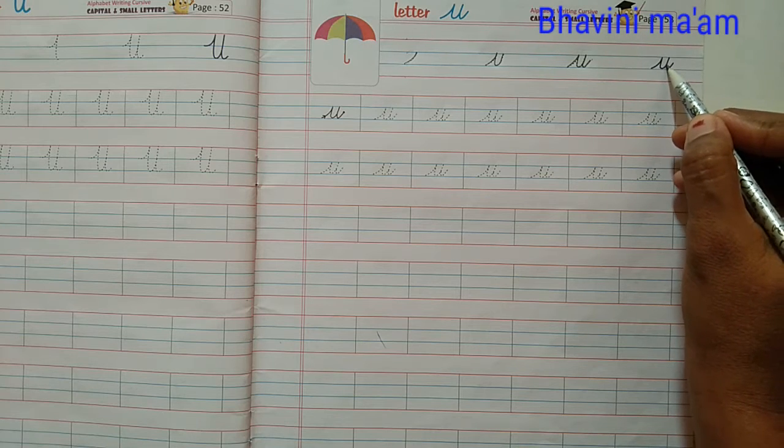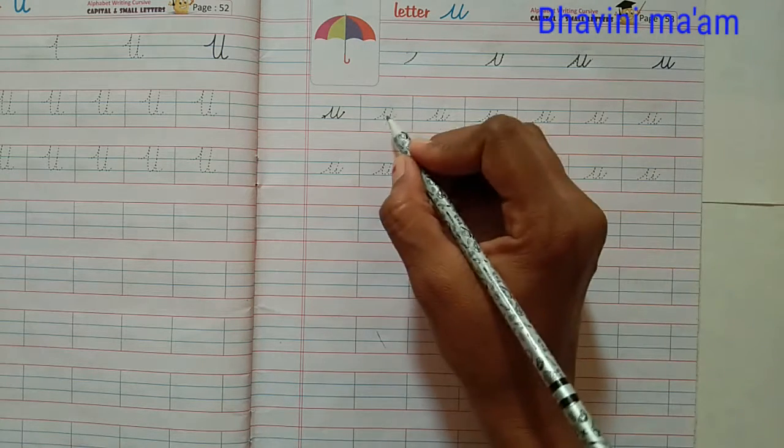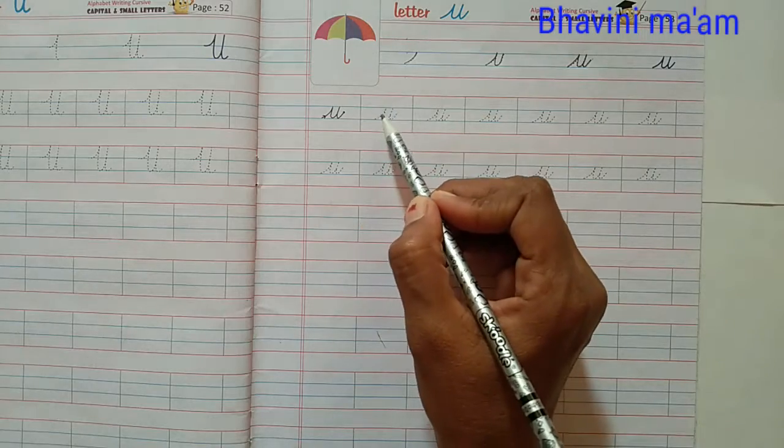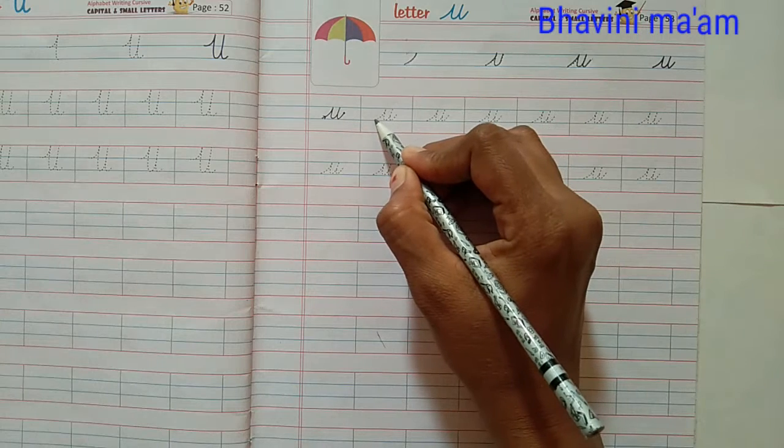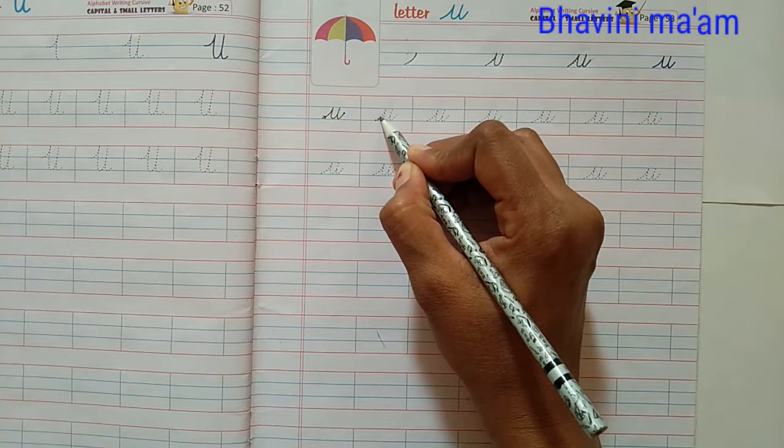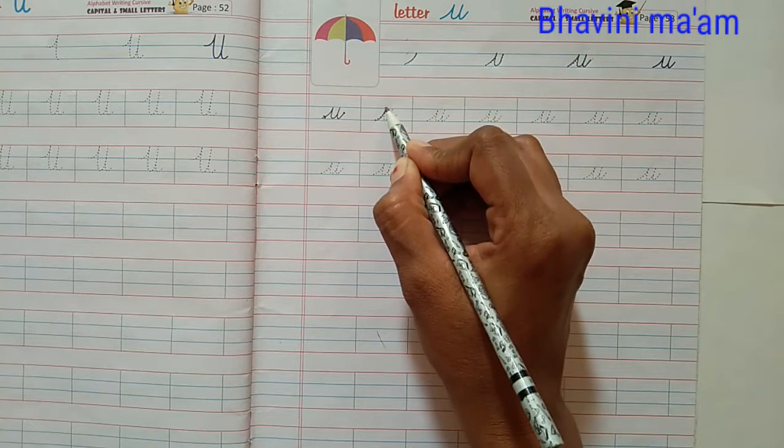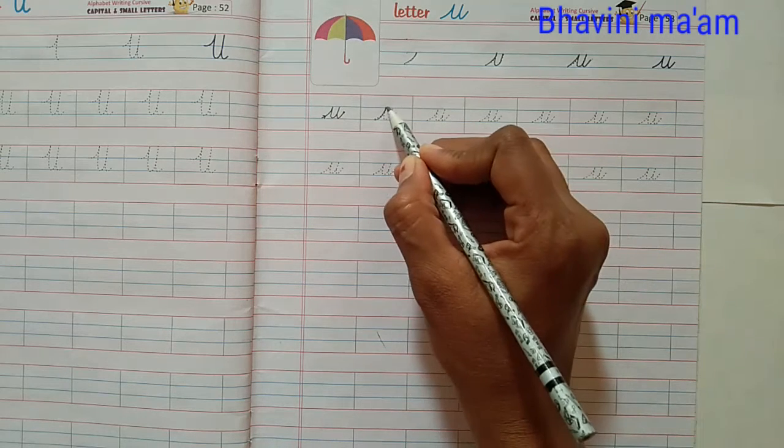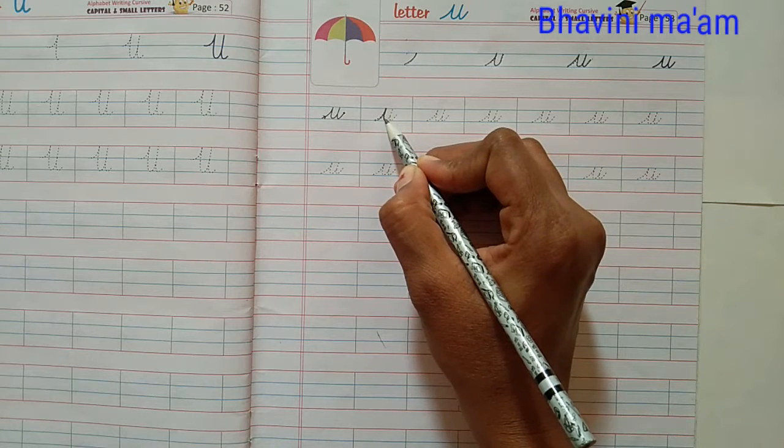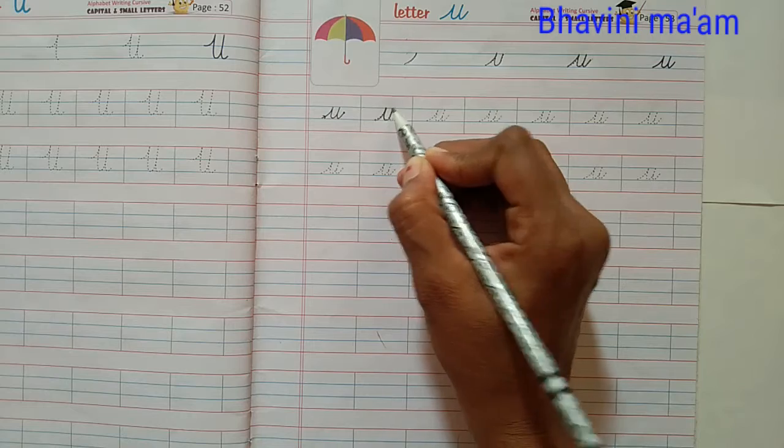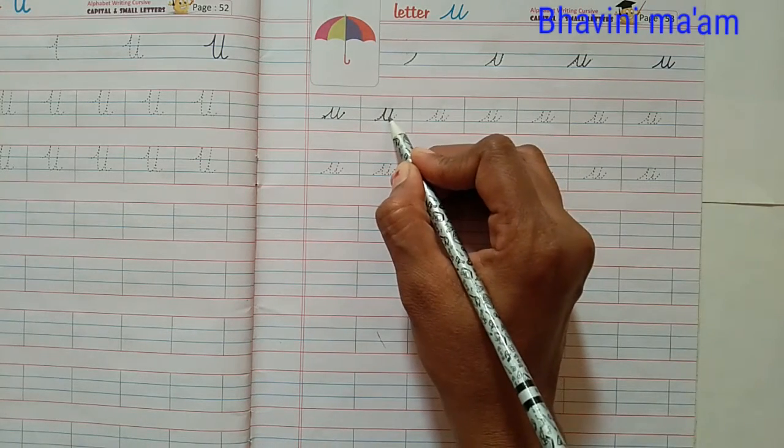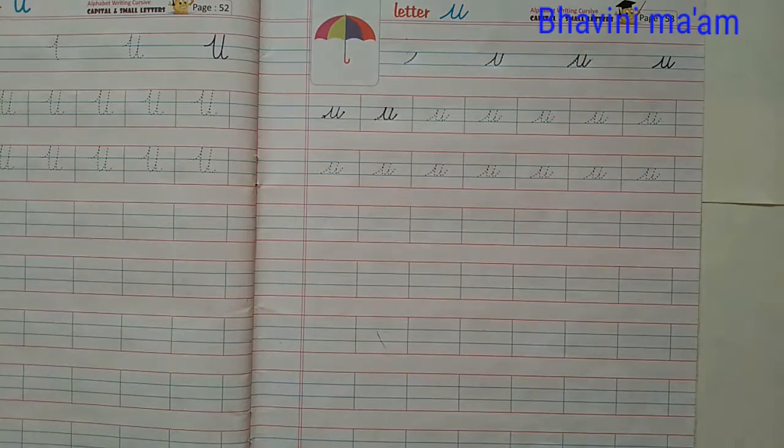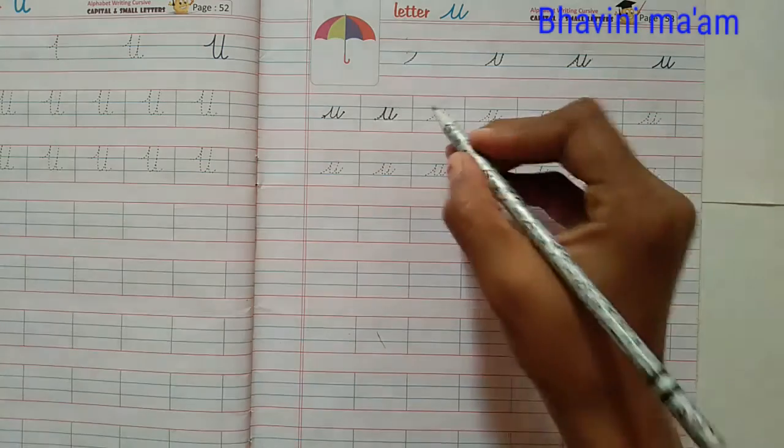Small cursive letter U. Now tracing time. Start from here. Second blue line. Go up, up, up and touch the first blue line. Come back down. Make a up curve. Then joining by this line. Which letter is this? U.